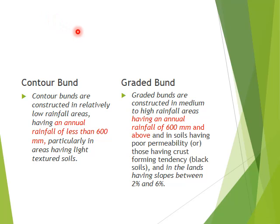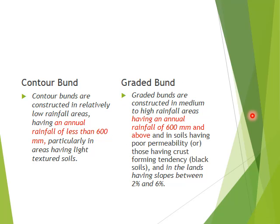To avoid this, in high rainfall areas some grade is provided so that from the top the water will be going down along the grade. Graded bunds are constructed in lands having slopes between 2 to 6 percent, and when the soil has poor permeability we can go for graded bunds.